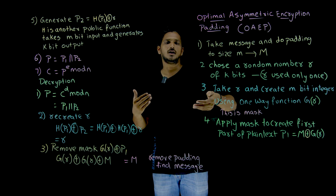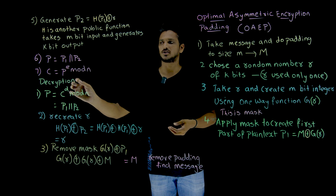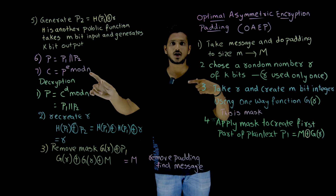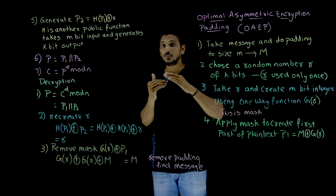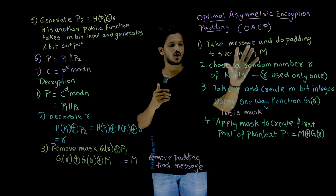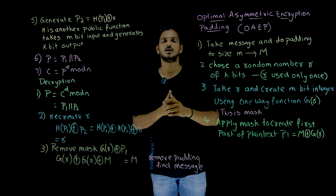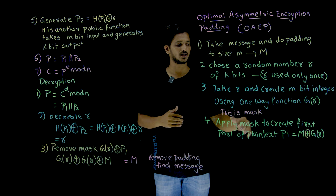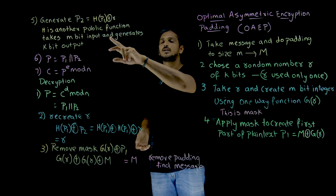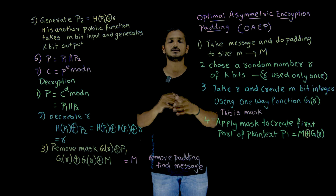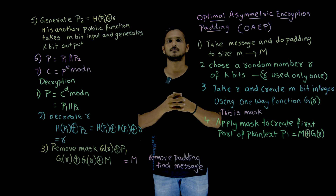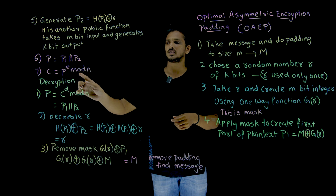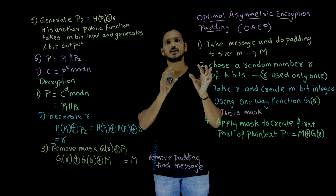Now apply the RSA algorithm on this plain text. The ciphertext C = P^e mod n. This is what we do in RSA. Before that, what we have done in OAEP: actual data is converted, it is going to be masked, and from that we generate the first part and the second part. This entire two parts we call plain text, and the ciphertext C = P^e mod n is what we send over the internet.